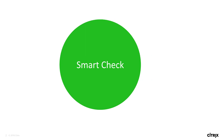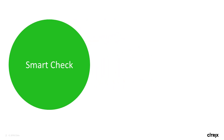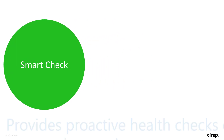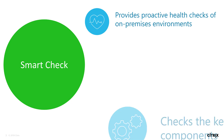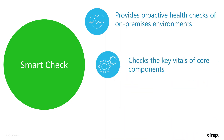Citrix SmartCheck helps keep your ZenApp and ZenDesktop on-premises environments healthy and up-to-date by providing proactive health checks. It does this by automating the process of checking key vitals of your ZenApp and ZenDesktop components, such as delivery controllers, storefront, provisioning, licensing, and VDAs.